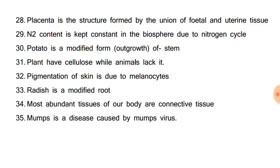The most abundant tissue of our body is connective tissue. Special connective tissue consists of reticular connective tissue, adipose tissue, cartilage, bones, and blood. Other kinds of connective tissue include fibrous, elastic, and lymphoid connective tissue. Mumps is a disease caused by a virus known as mumps virus.